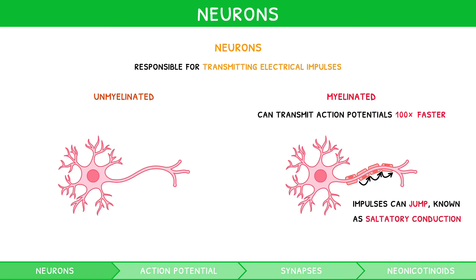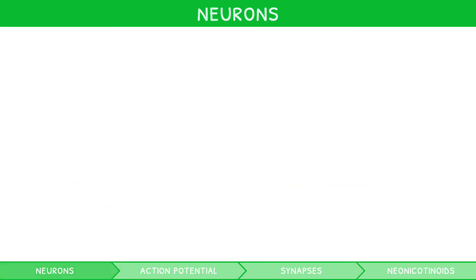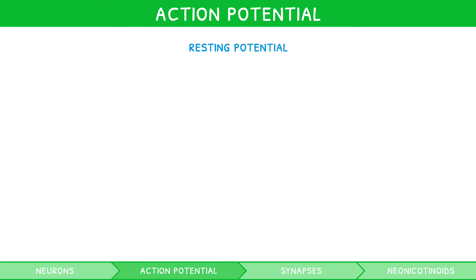The structure of a nerve allows it to transmit electrical impulses. The key term to familiarise yourself with is an action potential. However, to understand action potentials, we must first outline the normal resting state of a neuron, known as the resting potential.